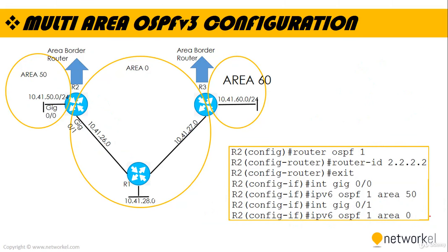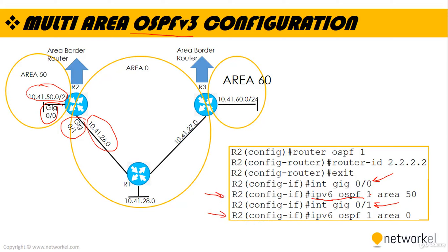For Multi-Area OSPFv3 configuration, we enter interface mode separately and activate OSPF on each interface. For GigabitEthernet 0/0, we activate IPv6 routing using the command 'ipv6 ospf [process-number] area [area-number]'. We are not using network IDs here; instead, we activate IPv6 OSPF directly under each interface and specify the area number.